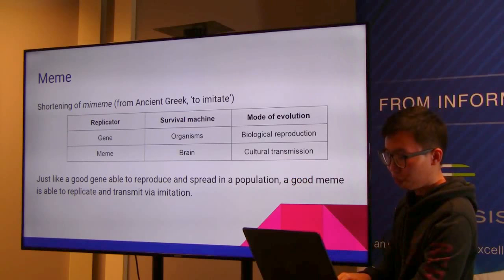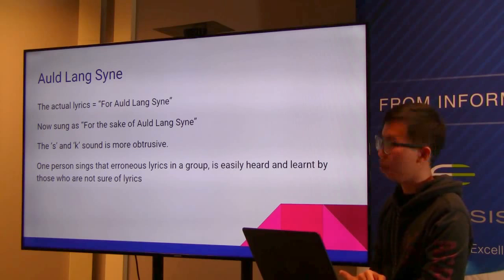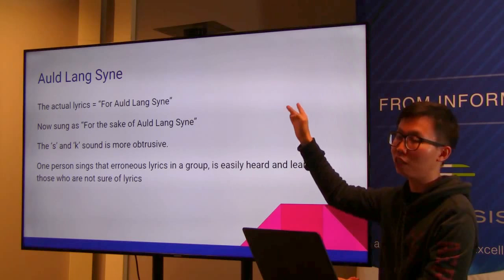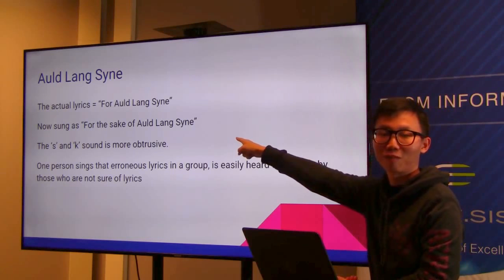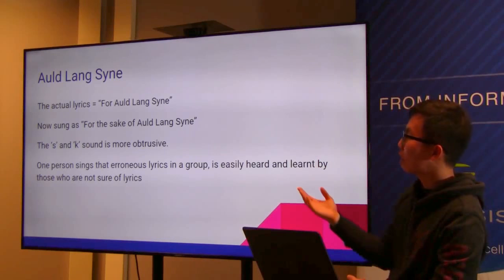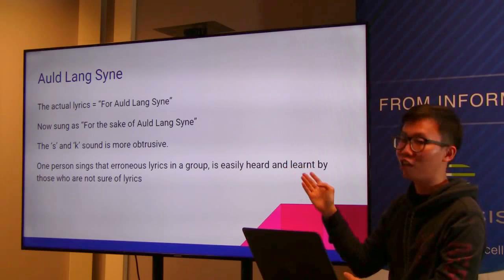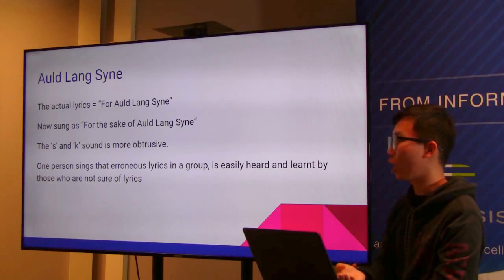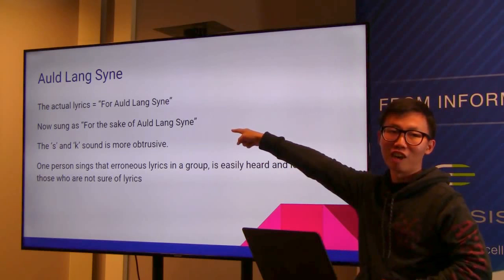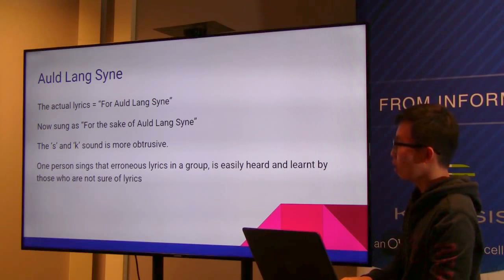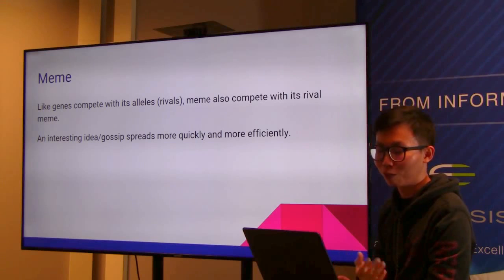As an example, Dawkins discusses the song 'Auld Lang Syne.' The actual lyric is 'for auld lang syne,' but people now commonly sing 'for the sake of auld lang syne.' He theorizes this happened because the S and K sounds are more obtrusive — when one person sings the erroneous lyrics in a group, it is easily heard and learned by those unsure of the correct words. The meme spreads, competing with its rival meme. More interesting or catchy ideas and gossip spread more quickly and efficiently.